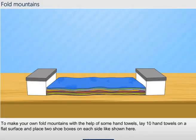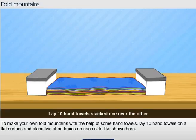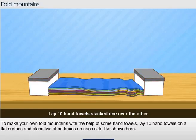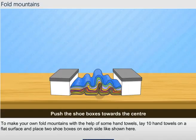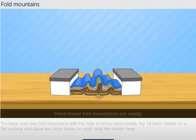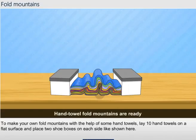To make your own fold mountains, with the help of some hand towels, lay ten hand towels on a flat surface and place two shoeboxes on each side like shown here. Push the shoeboxes towards the center as shown. This activity shows us how fold mountains are formed when forces move towards a common center.